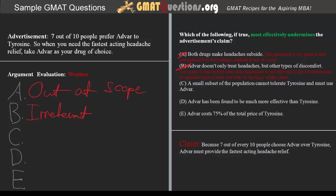Answer C: A small subset of the population cannot tolerate tyrosine and must use Advar. The statement claims that a small subset of the population cannot actually take tyrosine, so they're forced to purchase Advar instead. If a subset of the population cannot take a certain product and is forced to take the next popular brand — Advar — that may reasonably lead to a rise in sales, accounting for the higher rate of people who prefer Advar to tyrosine.